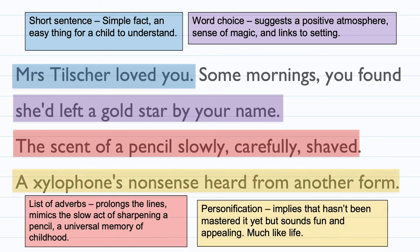'A xylophone's nonsense heard from another form' is personification — a xylophone cannot hear things, but here it does. It implies that the xylophone hasn't been mastered yet, but sounds fun and appealing, much like life in this classroom is fun and appealing.